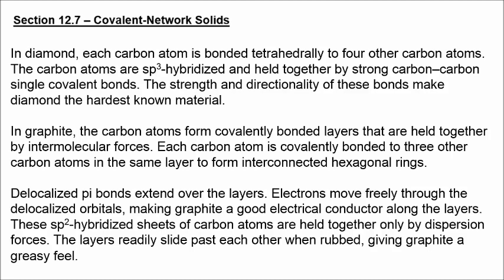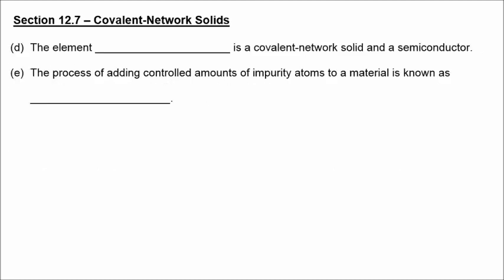When you drag your pencil across a piece of paper, flakes of graphite are being removed and deposited on the paper. Delocalized electrons extend over the layers. Electrons move freely through the delocalized orbitals. Graphite is a good electrical conductor and a good lubricant and gives graphite kind of a greasy feel. The element silicon, or germanium, would be a covalent network solid and also a semiconductor. Let's talk about semiconductors. The process of adding controlled amounts of impurity atoms to a material is known as doping.